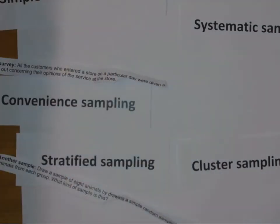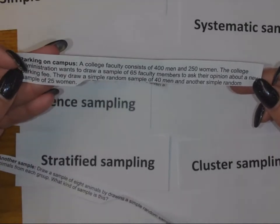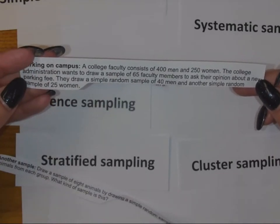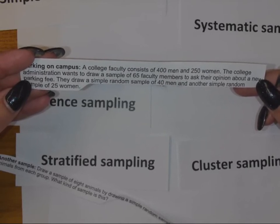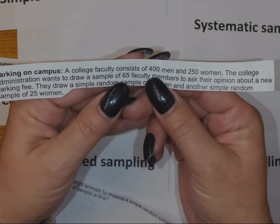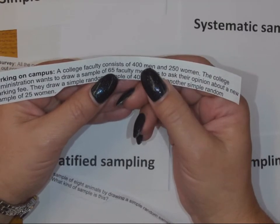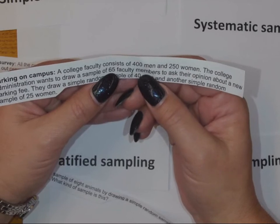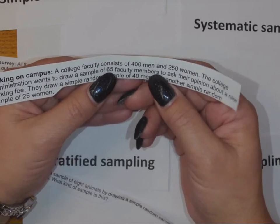Parking on campus: a college faculty consisting of 400 men and 250 women. The college administration wants to draw a sample of 65 faculty members. Let's think about that for a second. Why 65? Because there's 400 men and 250 women, so that's 650, right? So they want 65 faculty members or hopefully you're saying 10%.